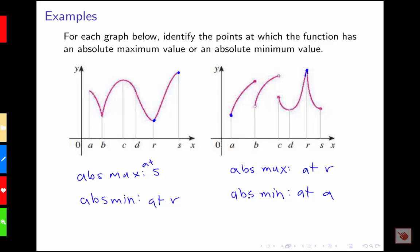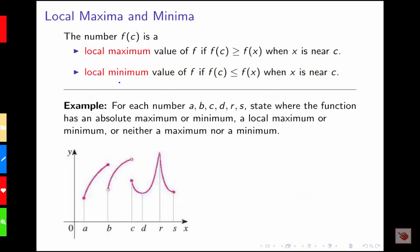One thing that absolute min and max doesn't account for is some of these other values which still seem somewhat special — they're not the biggest or the smallest over the whole interval, but they are bigger or smaller than everything near them. That brings us to the next kind of extreme value: our local extremes. We can talk about absolute extremes — absolute min and absolute max — as well as local extremes, local mins and local maxes.